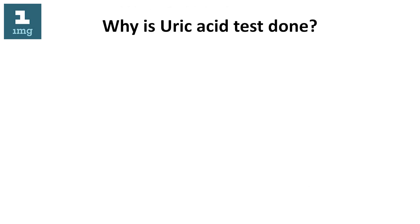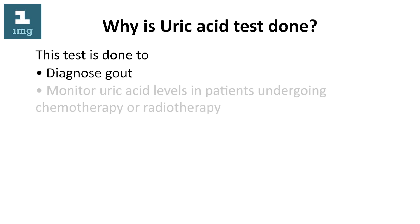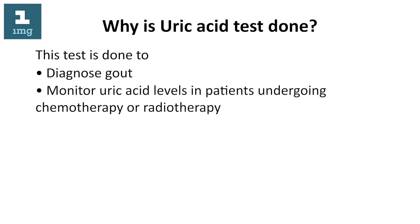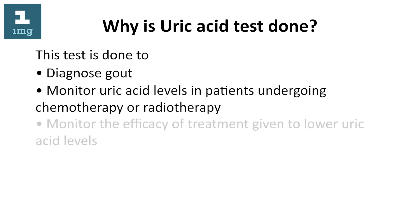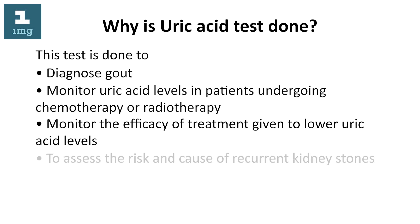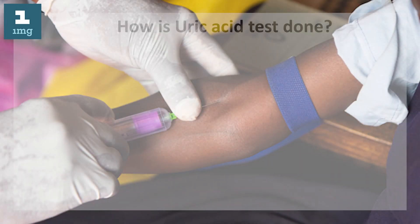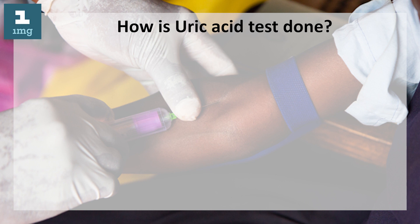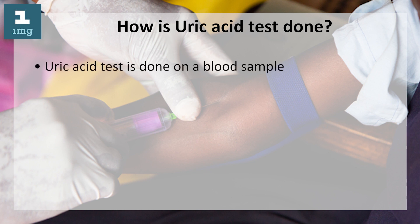Why is a uric acid test done? This test is done to diagnose gout, monitor uric acid levels in patients undergoing chemotherapy or radiotherapy, monitor the efficacy of treatment given to lower uric acid levels, and to assess the risk and cause of recurrent kidney stones.